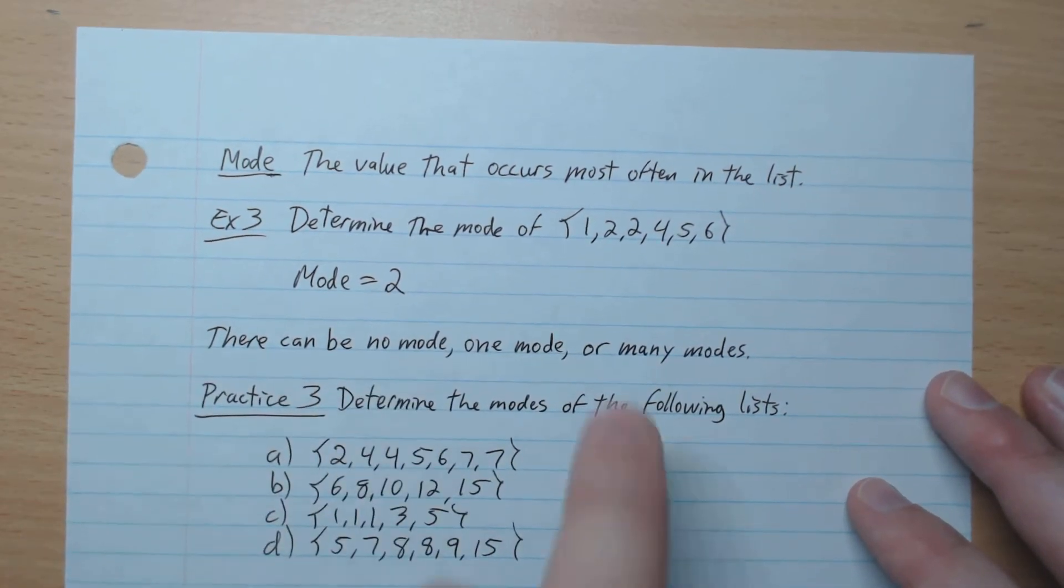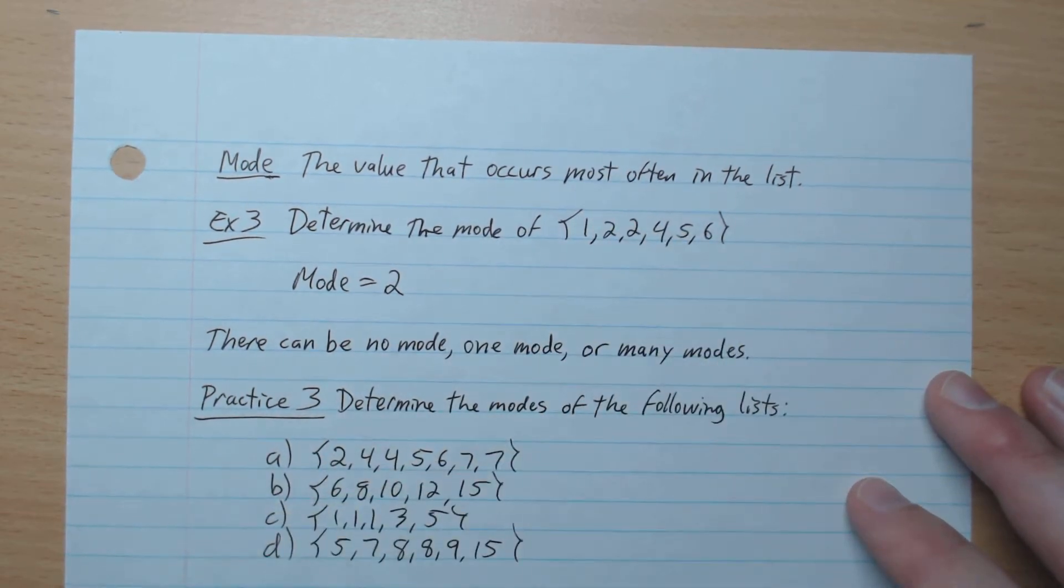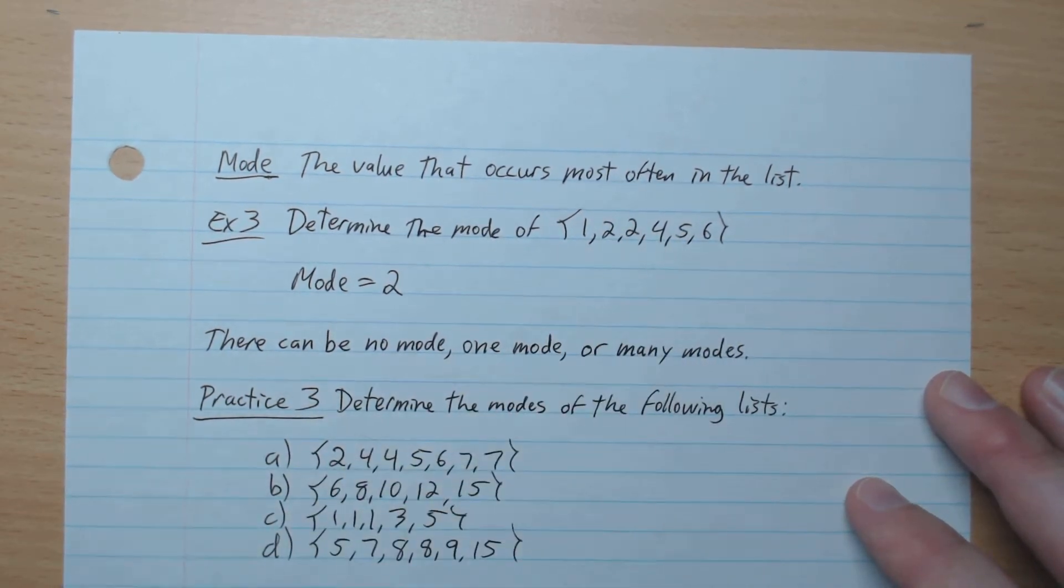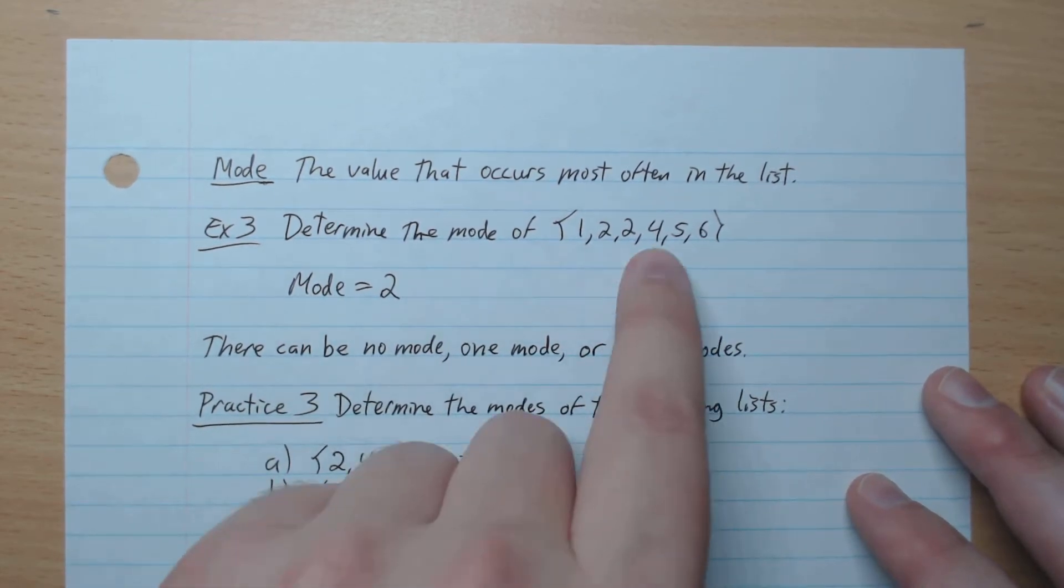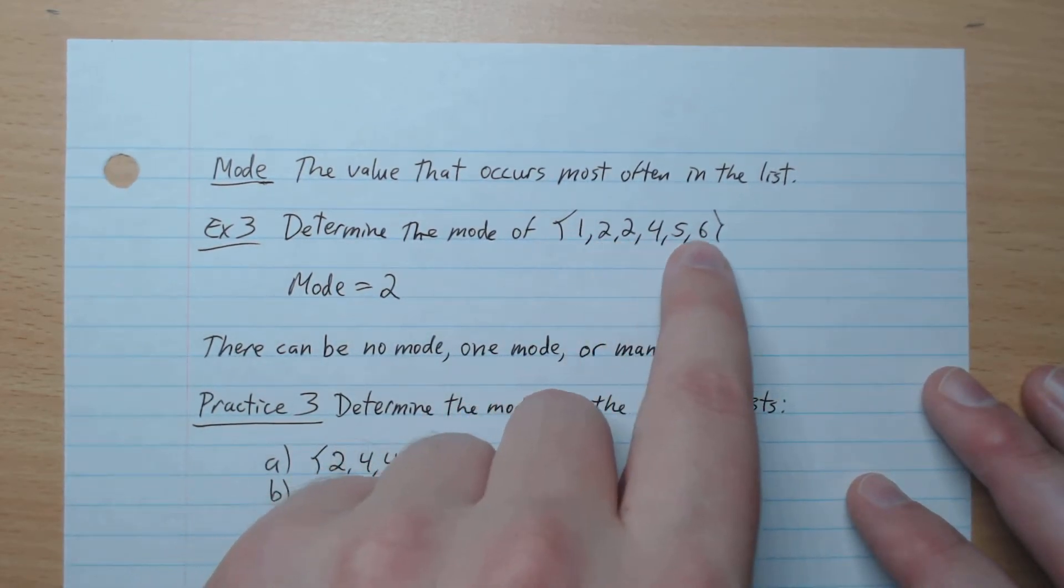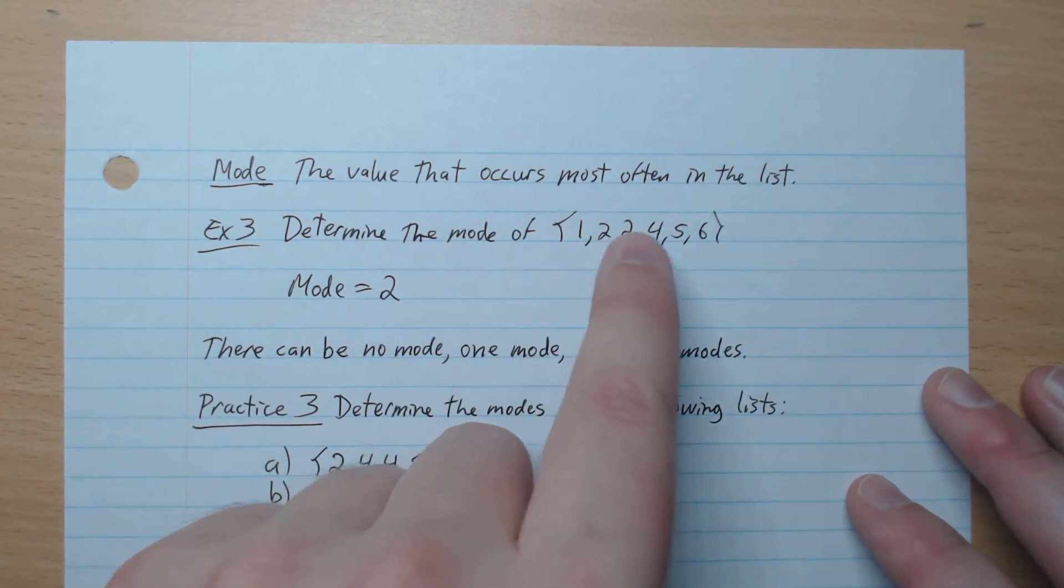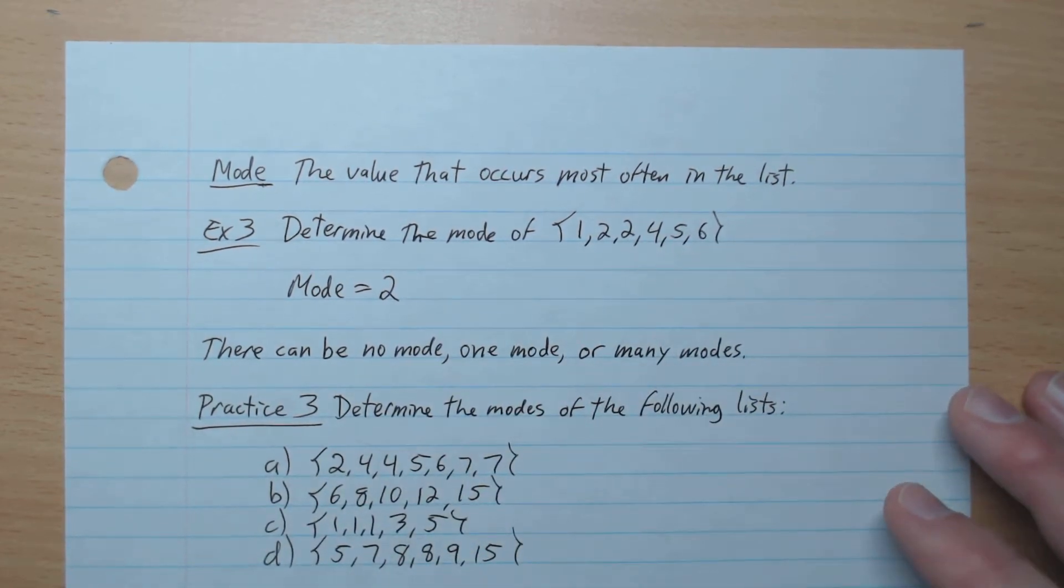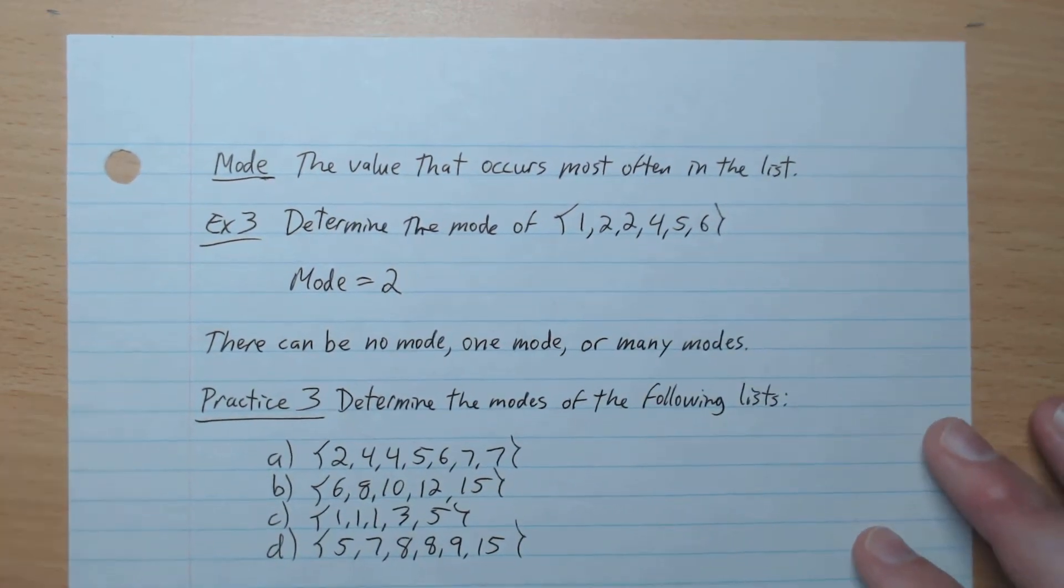So there can be no mode, right? If none of them occur more often, like if they all appear once, there's no mode. There can be one mode, like in this example, or many modes. If it was 1, 2, 2, 4, 4, 5, 6, then the modes would be 2 and 4, like that. So it's possible to have many modes.